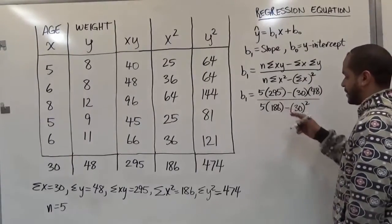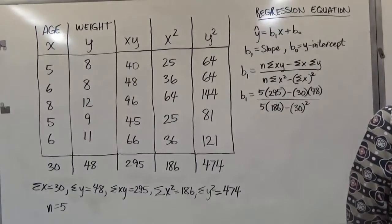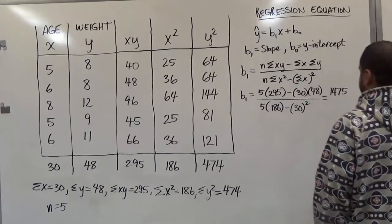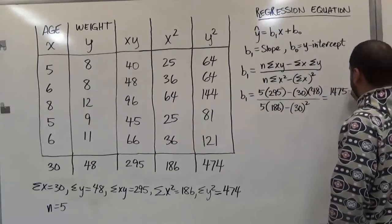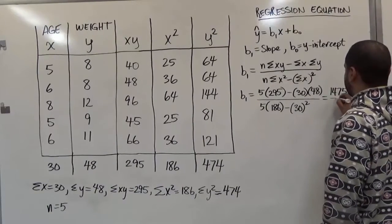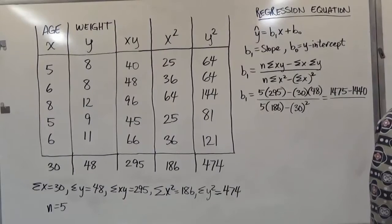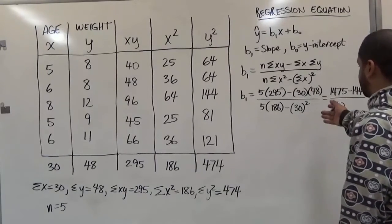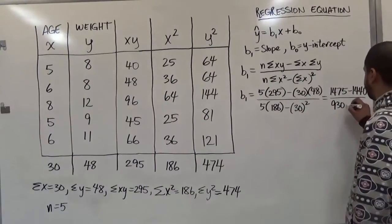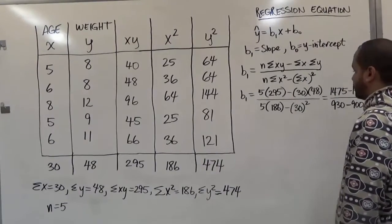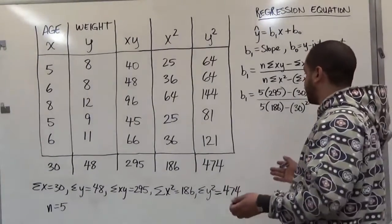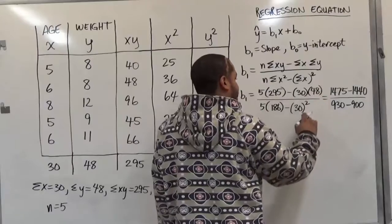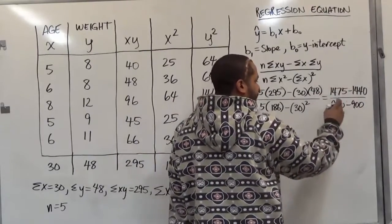Let's calculate what we get on top. Five times 295 is 1475, while 30 times 48 would give us 1440. In the denominator here, we have 5 times 186, that's going to give us 930, and 30 squared is 900.